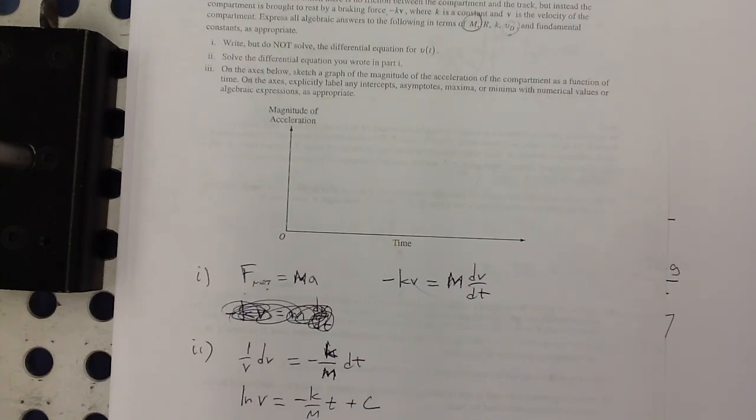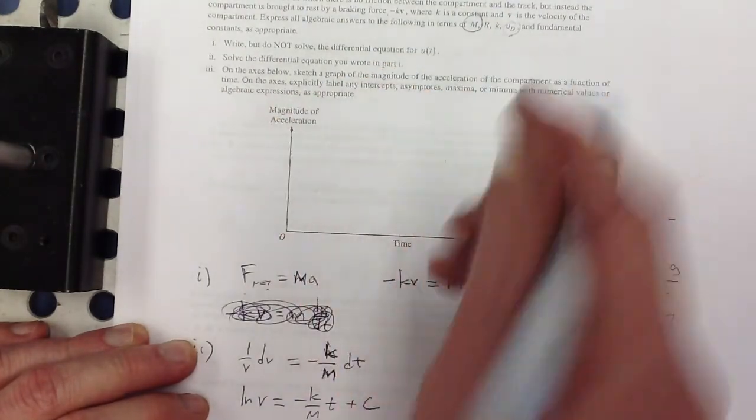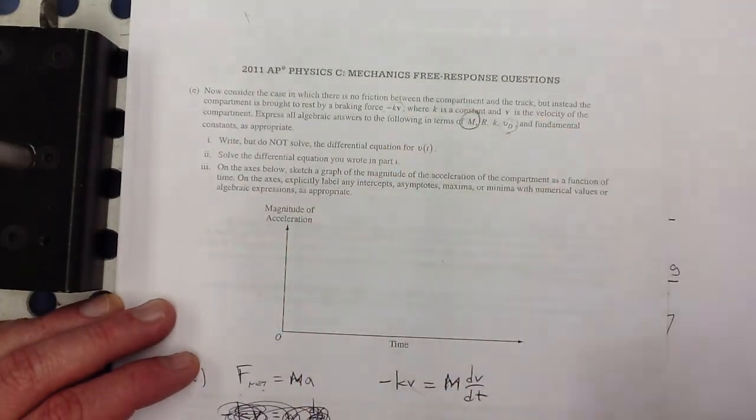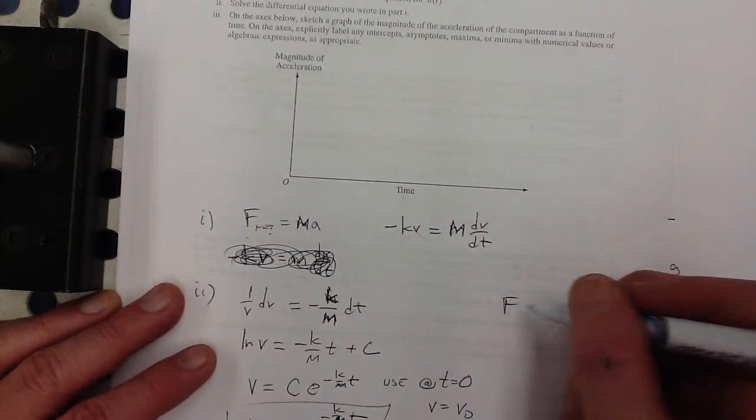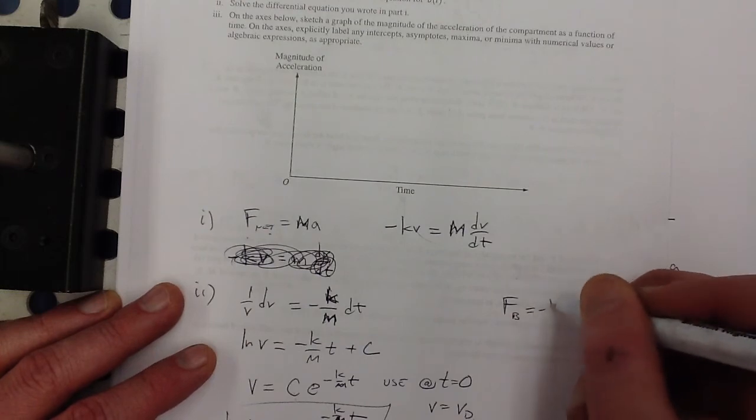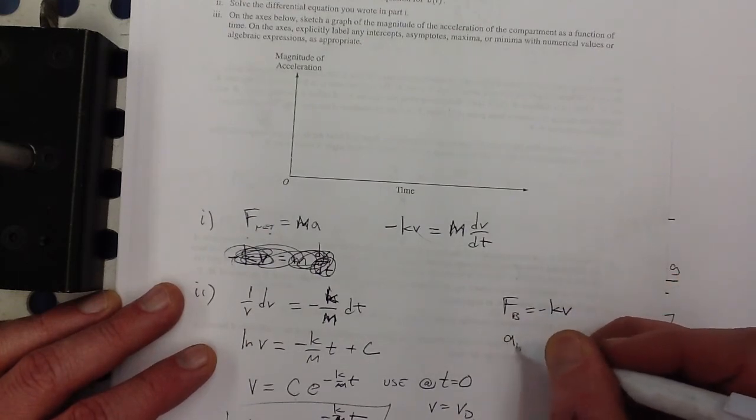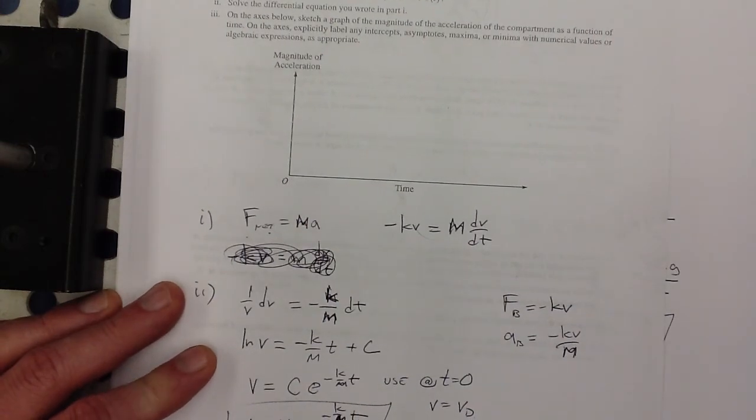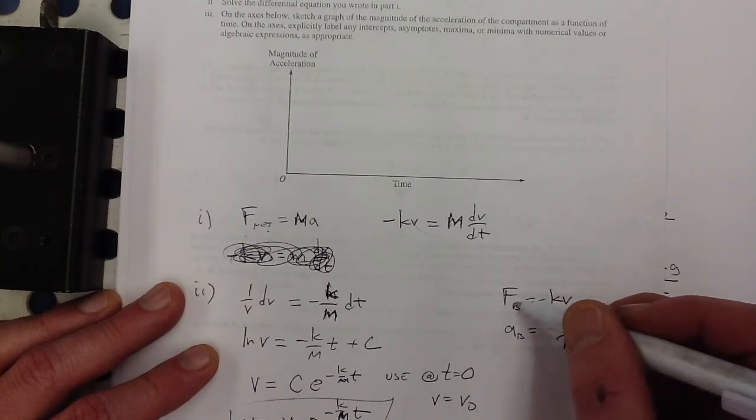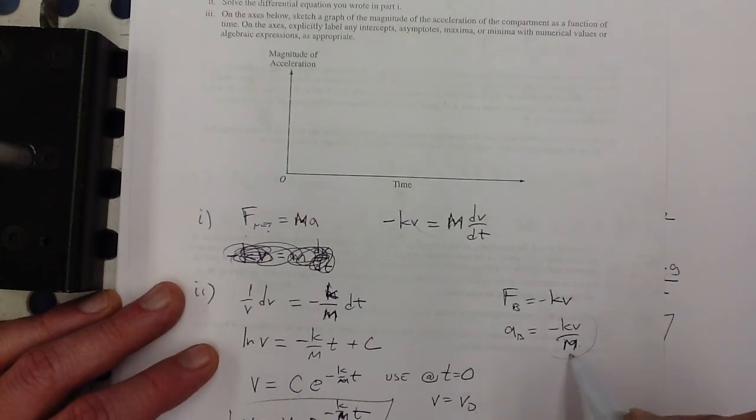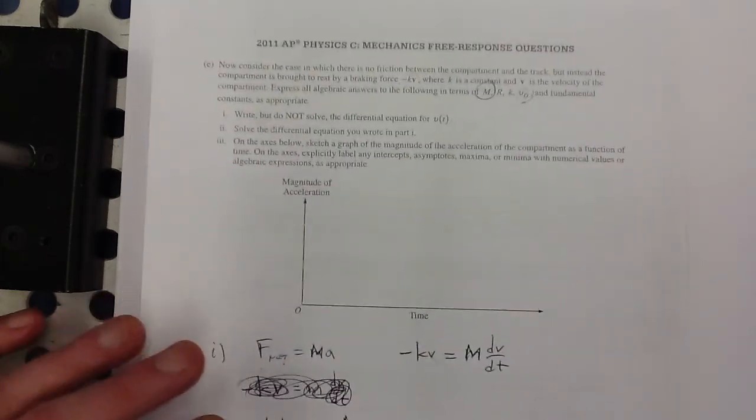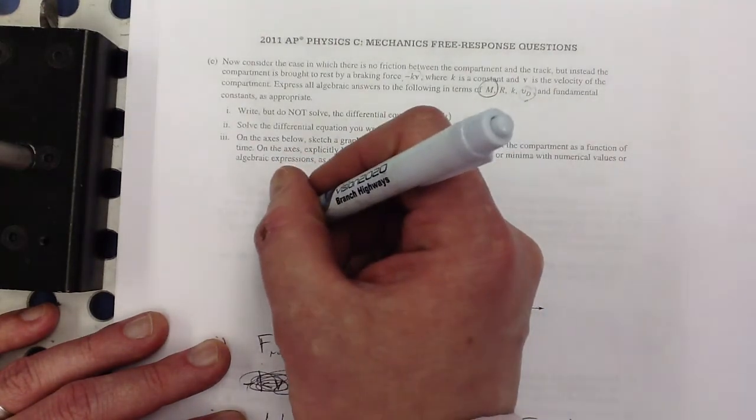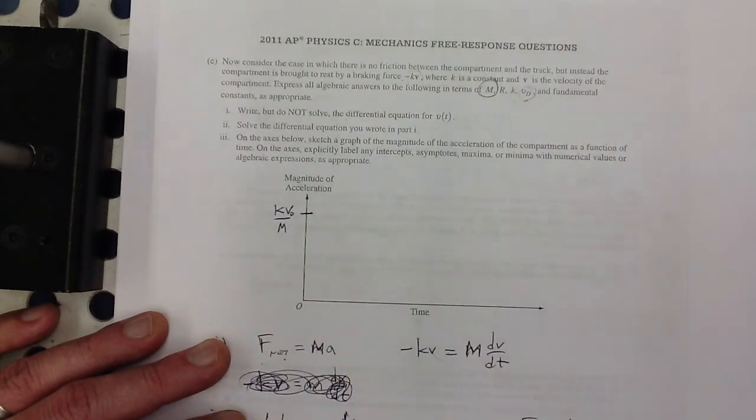All right so what's the magnitude of the acceleration at the very beginning it would be the braking force is kv right so at the very beginning the braking if that's the braking force, the force of braking is negative kv then the acceleration of braking would be negative kv over m right? Would it not because I'm just dividing force equals mass times acceleration so divide the mass so that's my initial acceleration and they wanted magnitude here so all positive values so I'm going to mark that as kv over m.